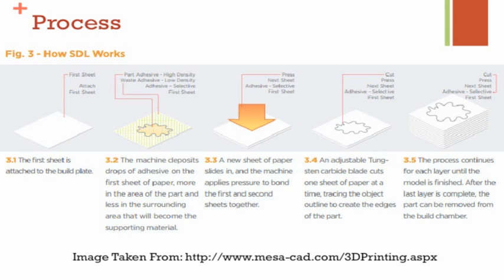For the first learning outcome, we'll talk about the LOM process, which has five steps. First, a sheet of paper or material is placed onto the build plate — there is some glue on the build plate to attach the first sheet. Second, more glue is applied within the cross-section of the part, and less glue is applied outside the cross-section. Then a new sheet is placed on top and bonded with high pressure.